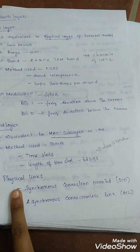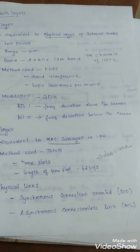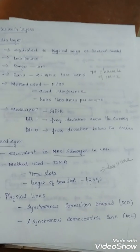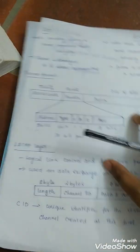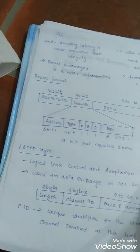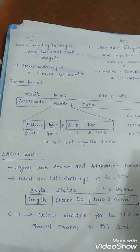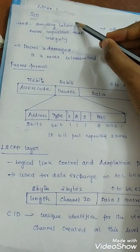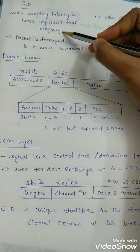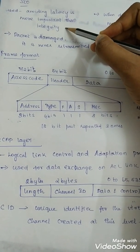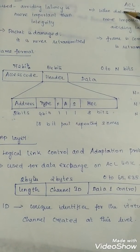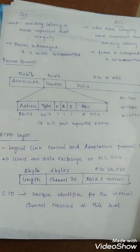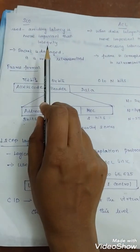Next one: physical links. Two types of physical links are used: Synchronous Connection Oriented link (SCO) and Asynchronous Connectionless link (ACL). Synchronous connection oriented link is used when avoiding latency is more important than integrity. Avoiding latency means delay in data delivery and integrity is error-free delivery.